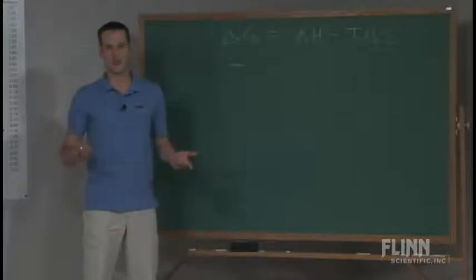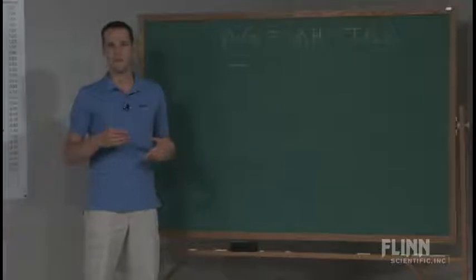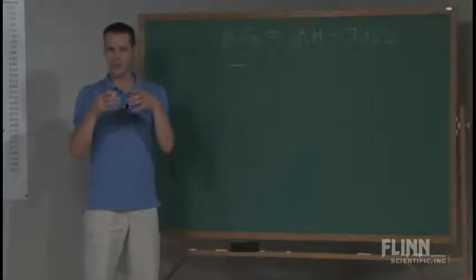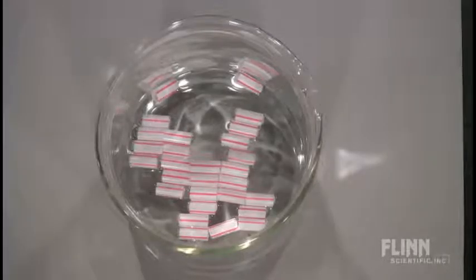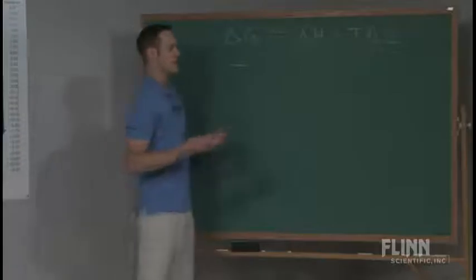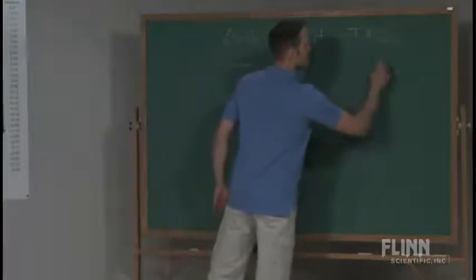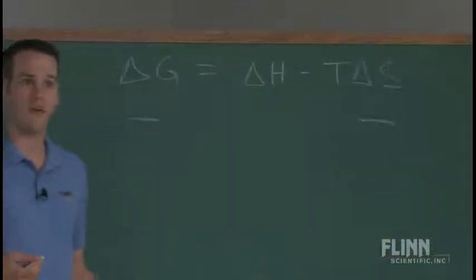So at an introductory level, I say disorder is okay. When I start getting into advanced chemistry, I really tell them that it's degrees of freedom. So when you have straws that are all lined up in a flat arrangement, end to end and side to side, there's not much room for different arrangements. So this is becoming less entropic. It's becoming less disordered. There are fewer degrees of freedom.